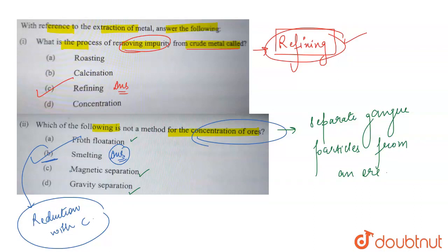A flux is formed in this process. This is not at all a method used for the concentration of ores. The correct answer is option B in this case. That's all for the question.